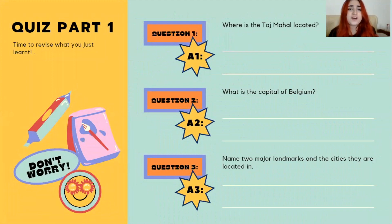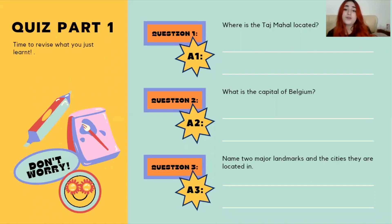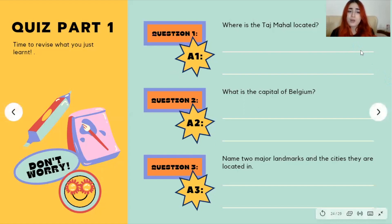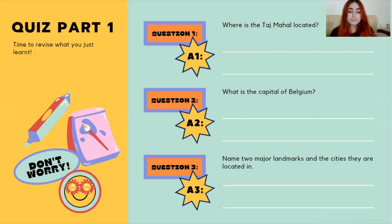Now let's do some fun quizzes. Feel free to pause the video so you can take time to answer the questions. The first question is: where is the Taj Mahal located? The second question is: what is the capital of Belgium? And the third question is: can you name any two major landmarks and the cities they are located in?